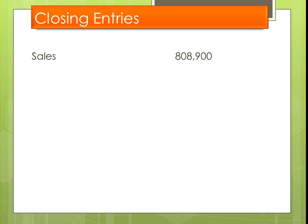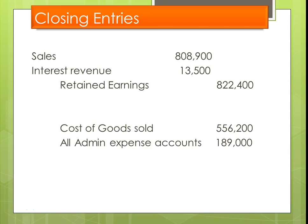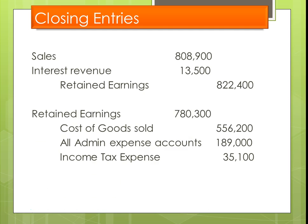These are the closing entries: we zero out our sales and interest revenue, crediting retained earnings. Then we zero out our expense accounts — cost of goods sold and all administrative expenses. Remember, you wouldn't have one account called administrative expense; you'd have multiple accounts like salary expense, rent expense, and supplies expense — you'd go back and zero out all those individual accounts. Then income tax expense is zeroed out with the debit going to retained earnings. Finally, the last thing we do is zero out our dividends.